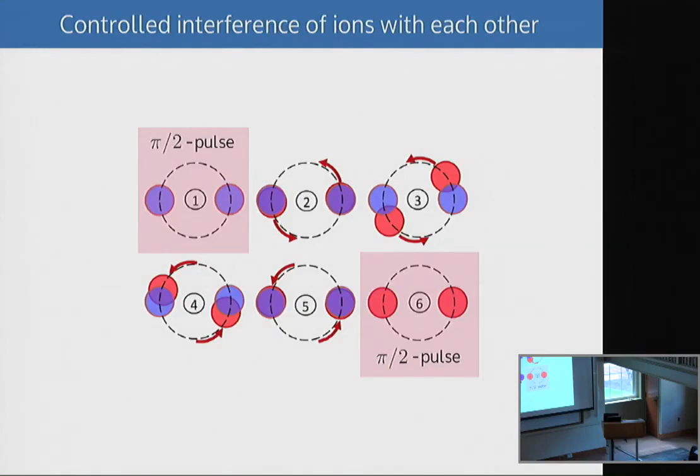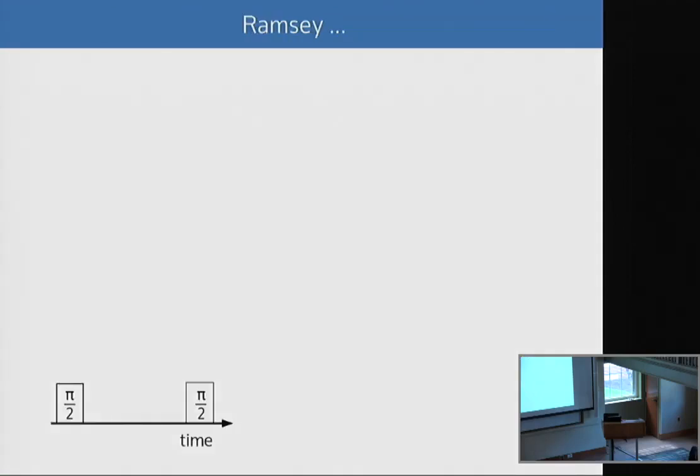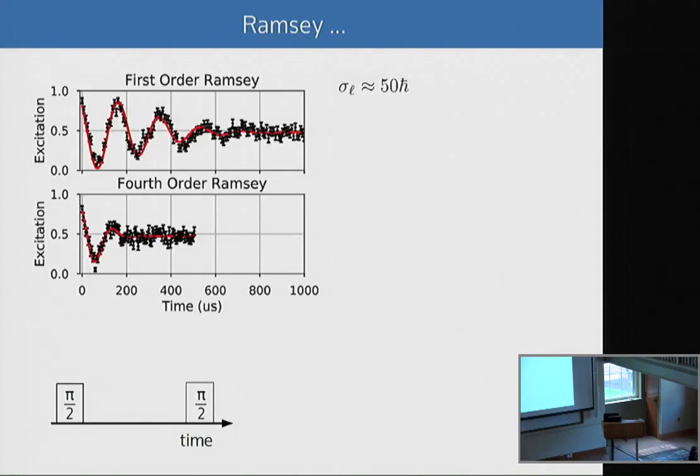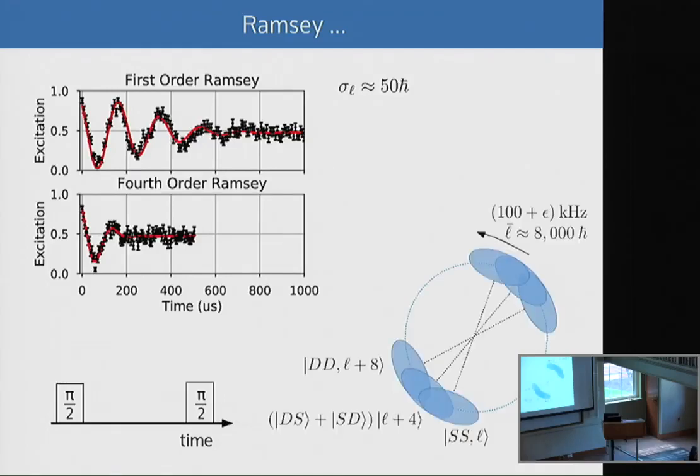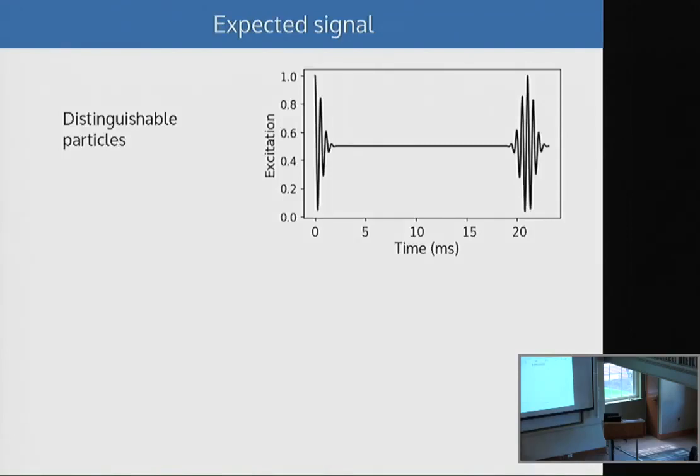If you can do Rabi oscillation, you can do pi over 2 pulses, so then we can think about doing our experiment. Let's look at a Ramsey experiment. These are Ramsey fringes slightly detuned so we can see Ramsey fringes. Again, we lose contrast as the wave packets separate, on the first order slower than on the fourth order because here they separate faster. Now what to expect? That's exactly what we expect because the wave packets separate. But then if we wait 20 milliseconds, the ion crystal should have rotated by pi, actually by 2 pi, and then the wave packets should overlap again. So we would actually expect a revival at 20 milliseconds. That's because it's on the fourth order.